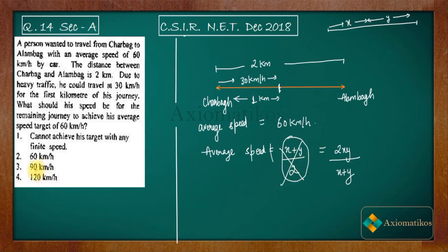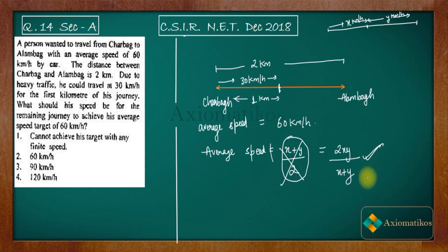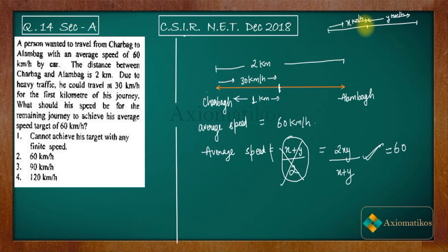Using the incorrect formula (x + y) / 2 would give you 90 km per hour, which is why that value appears as a trap option. The correct formula is 2xy / (x + y). Here, the average speed is given as 60, and x — the speed for the first kilometer — is 30 km per hour. Substituting: 2 × 30 × y / (30 + y) = 60.